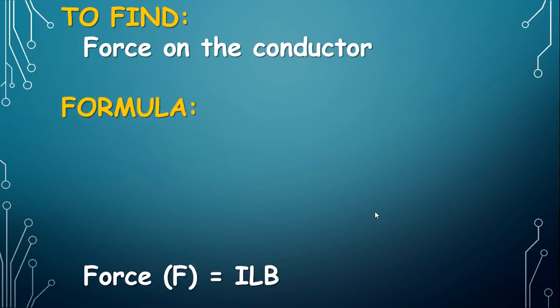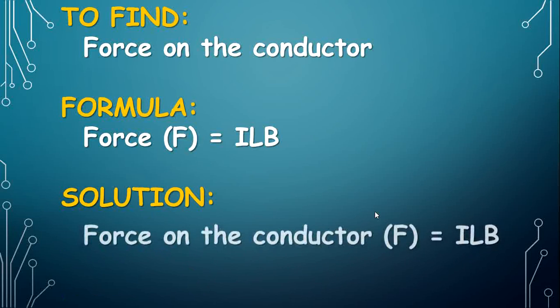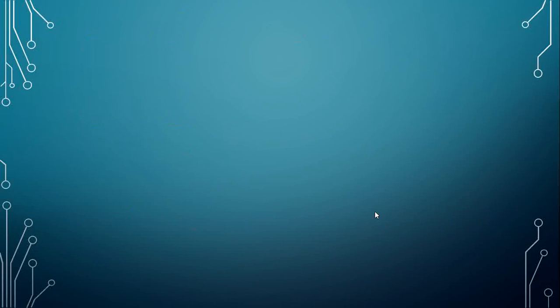Formula: Force F is equal to ILB. Here I is the current, L is the length of the conductor, and B is the magnetic field. Solution: Force on the conductor F is equal to ILB.